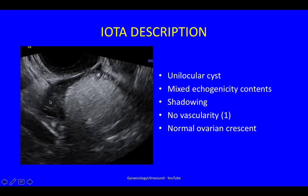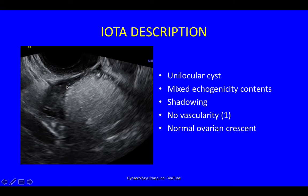Here you can see normal ovary at the edge. This is a unilocular lesion — one locule containing cyst contents which are mixed in echogenicity, which was more obvious in the video. You can see some little lines here in the cyst. There was no vascularity on the previous image using the correct Doppler settings, and some normal ovary at the edge. You can see shadowing here behind the cyst, which again was more obvious on the video image.